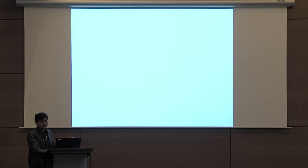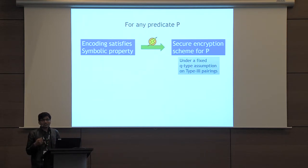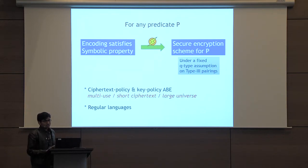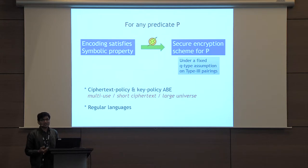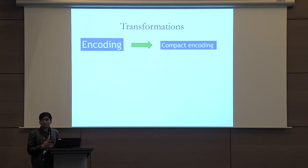We do several things with this property. Most importantly, we show that for any predicate P, if there exists an encoding that satisfies the symbolic property, then we can build a secure encryption scheme for P under a fixed Q-type assumption on type-3 pairings, which are the most efficient. We use this to design several encryption schemes for ciphertext policy and key policy ABE with nice properties and even for regular languages. We also show how to reduce the number of variables and polynomials in an encoding to a constant in a generic way while preserving the symbolic property.